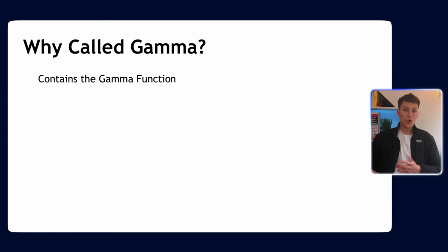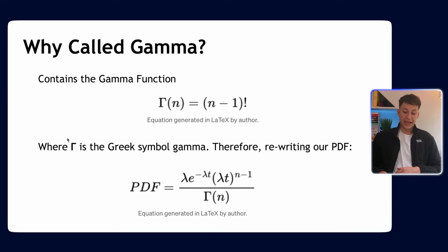Now you may be wondering why is it called the gamma distribution. Well there's a good reason for it. This formula, n minus 1 factorial, is called the gamma function, and this is basically the denominator of the gamma PDF we've shown in the previous slide. Here gamma is a Greek letter, and so we can rewrite the PDF using this. We replace the denominator with the gamma function, and that's the reason it's called the gamma distribution. Nothing really too fancy, it just has that gamma Greek letter attached to it which makes it called the gamma distribution.